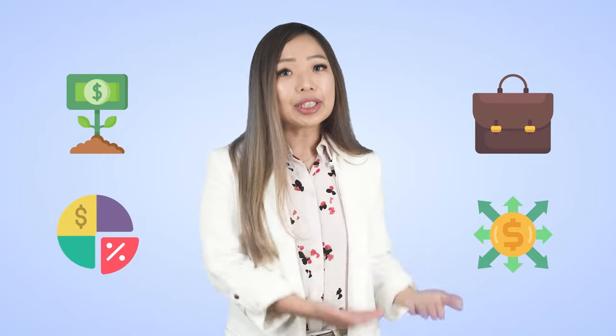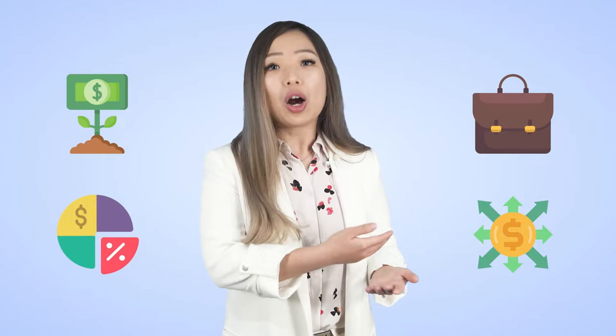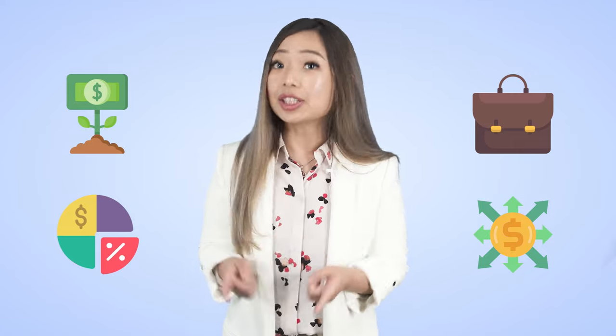A family trust can operate a business, make investments, and receive distributions and dividends. The trustee will then need to distribute the trust income according to the trust deed and the trust resolution. So it's super flexible in terms of income distribution.